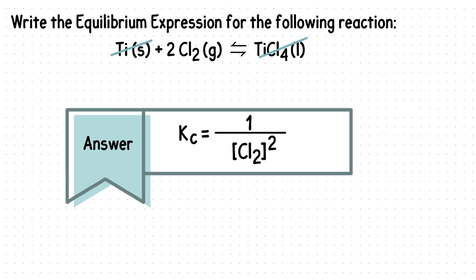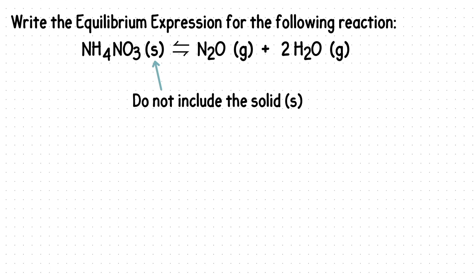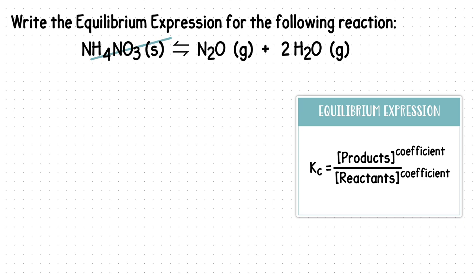Trick question number three is when there are only products left. We will not include the solid. Only the gases will be in our equilibrium expression. We will start with writing our products first. We will place N2O in brackets. Next to this will be H2O in brackets. We will account for the two coefficient in front of H2O by placing it as our exponent for only H2O.